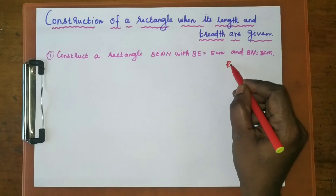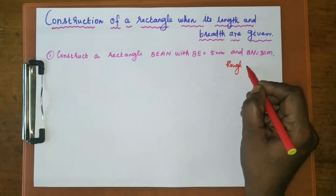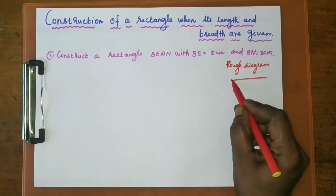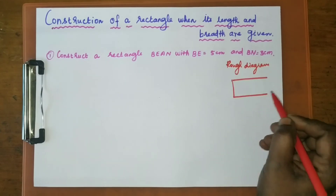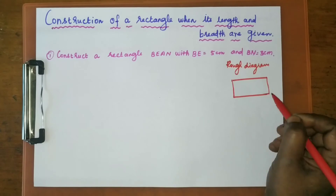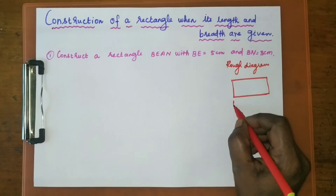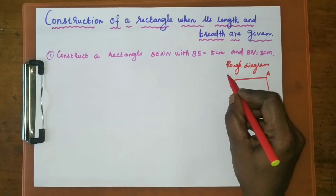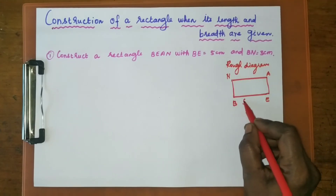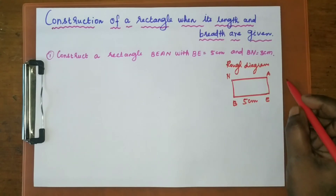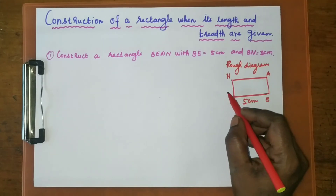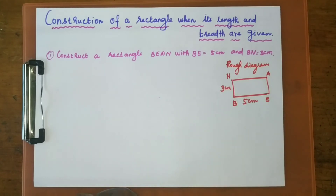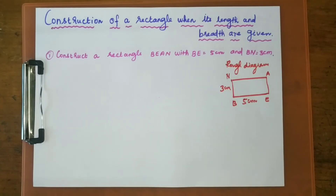First, we have to draw one rough diagram. The rough diagram will look like this. We name the rough diagram BEAN. Here, BE is equal to 5 centimeters and BN is equal to 3 centimeters.